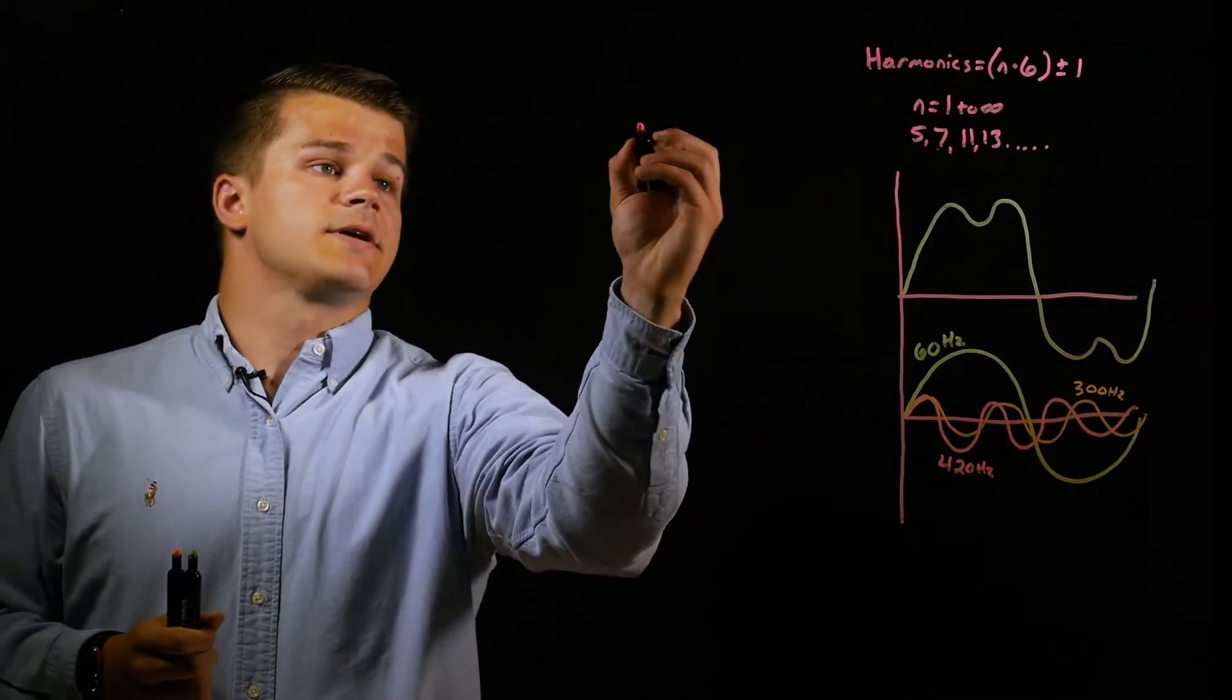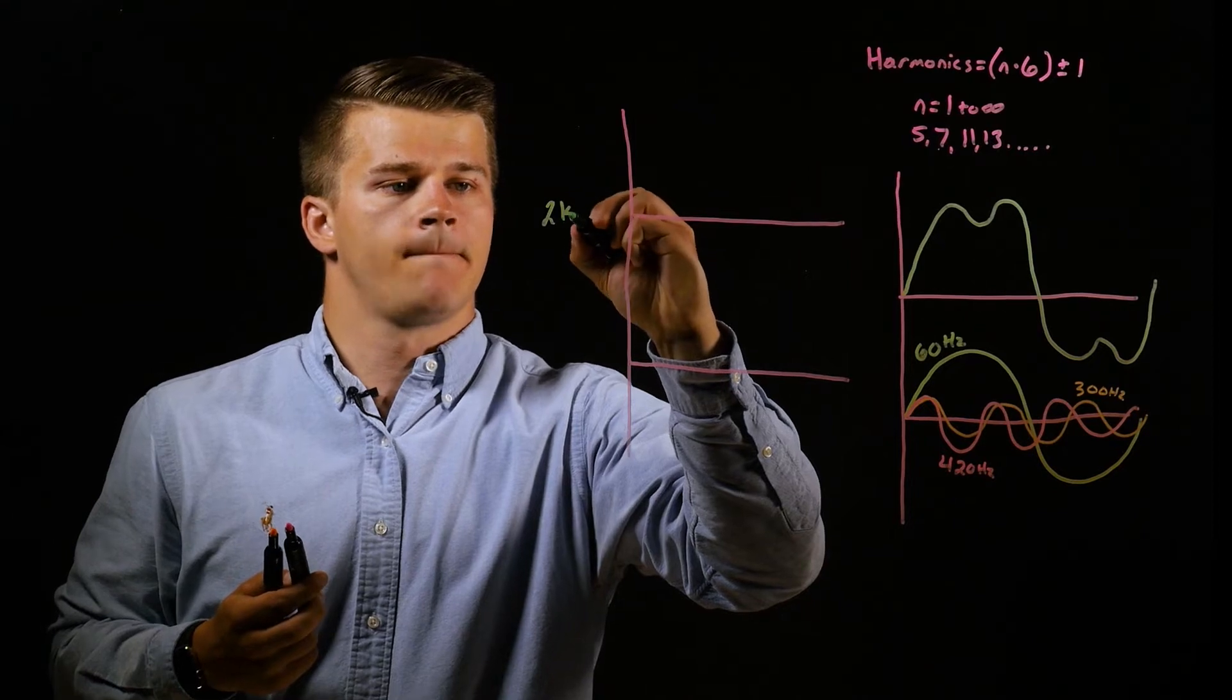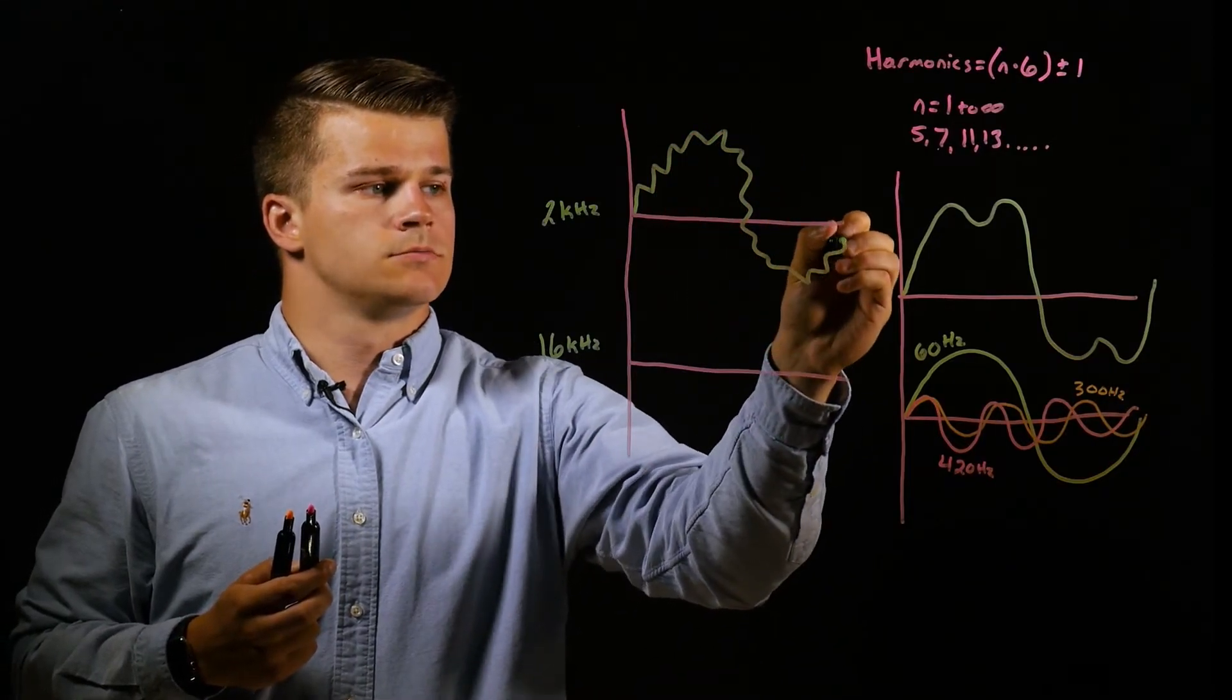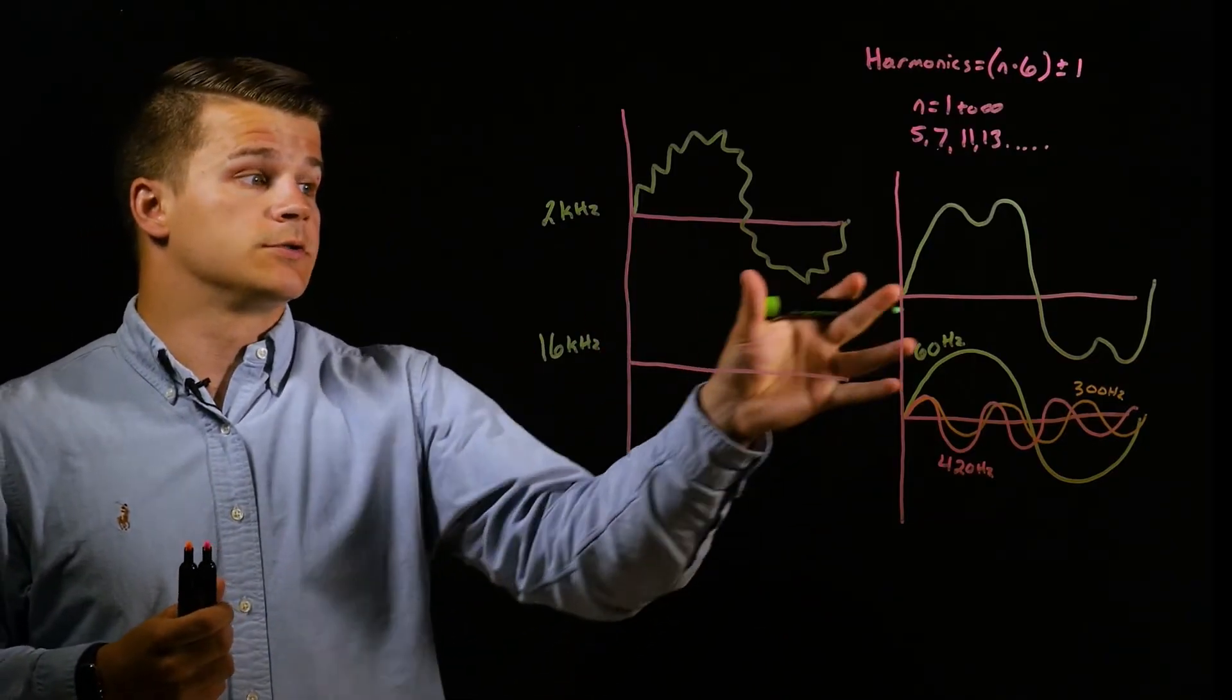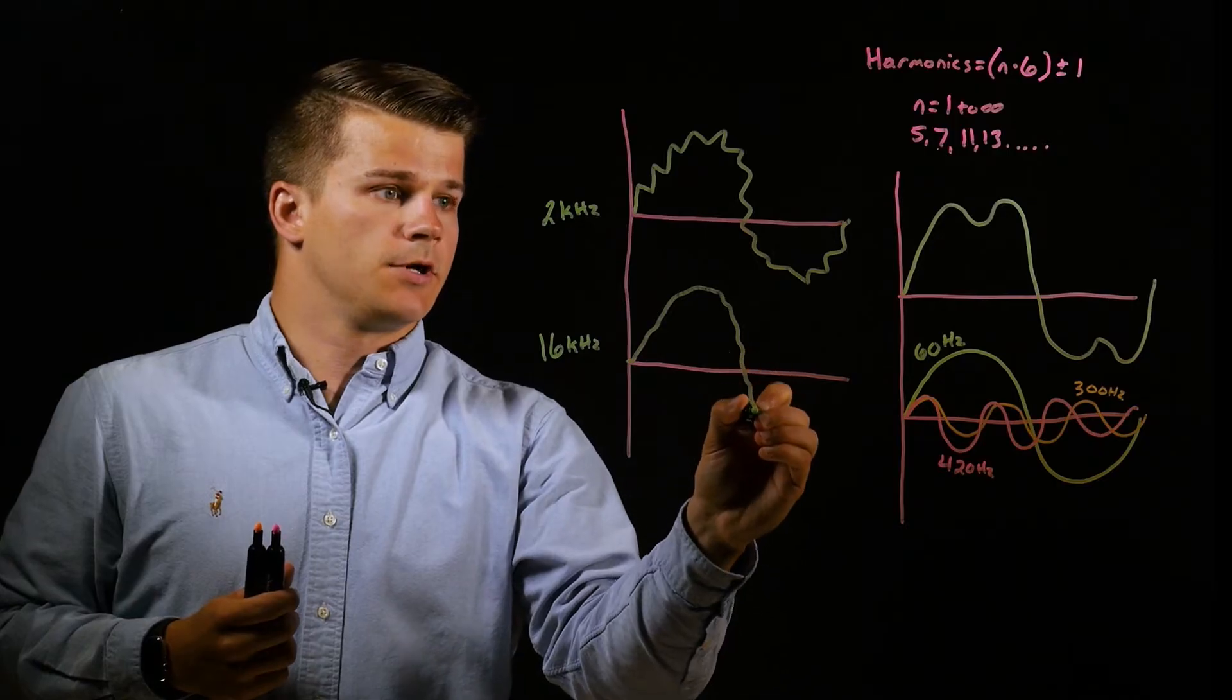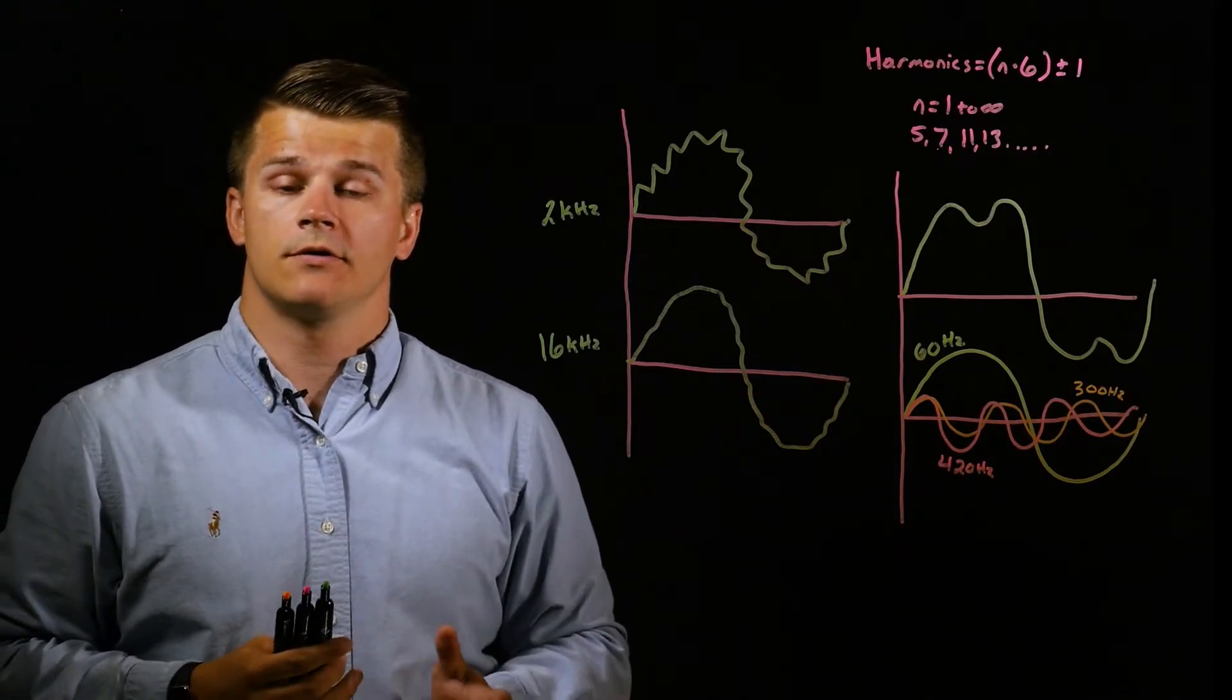The effect that has on the harmonics is if we draw one more graph, we'll say for example, if this is 2 kilohertz and this one is 16 kilohertz, you'll have high harmonic distortion with a lower switching frequency. And as your switching frequency increases, you'll decrease your harmonic content and get closer to a true sine wave. It won't be a perfect sine wave with the PWM, but it'll be much closer as the switching frequency increases. And this effect is more pronounced as the output frequency to the motor increases.